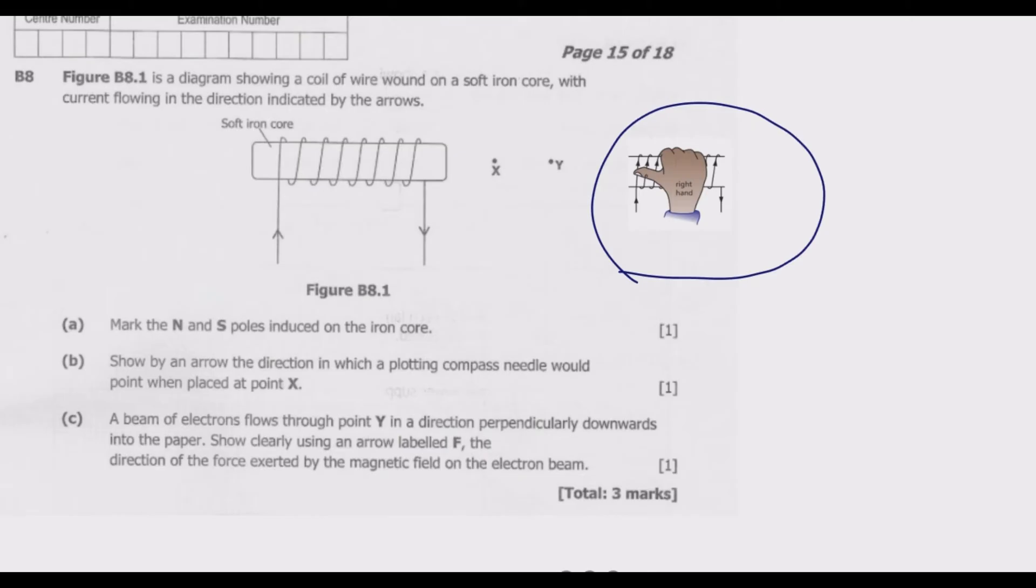This will be the direction of current. So when you hold like that, you know that where the thumb points is where the north is. This is the north pole and this is the south pole. If this is the north point and south point, then we can easily proceed to answer other questions. This is one mark.